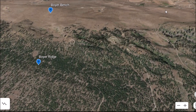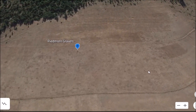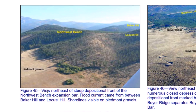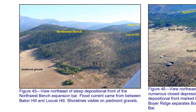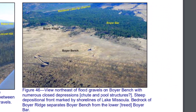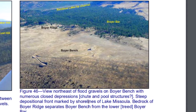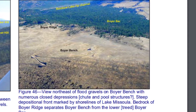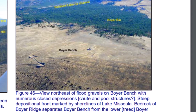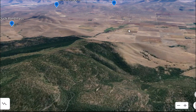Boyer Ridge, Boyer Bench, and there are a few other features right down here. This is called the Piedmont Gravels. Going down here you can see evidence of the flood layers. It says 'View northeast: a steep depositional front of the northwest bench expansion bar — flood current came between Baker Hill and Locust Hill — shorelines visible down here on the Piedmont Gravels.' Then this is the Boyer Bench nearby. It says 'View northeast: the flood gravels on Boyer Bench with numerous closed depressions, shoot and scour structures, steep depositional front marked by shorelines of Lake Missoula.' These are all flood deposits. The Clark Fork River is down here.